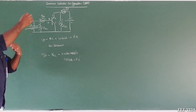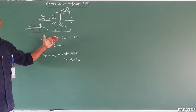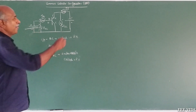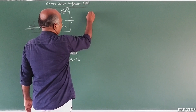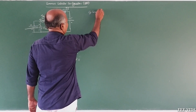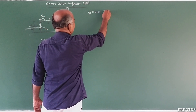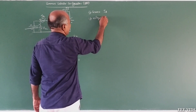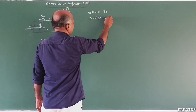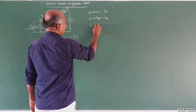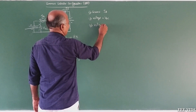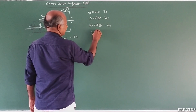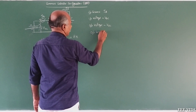In the circuit, for input and output in this configuration, the input current is the base current IB, the input voltage is VBC, the output voltage is VEC, and the output current is IE.